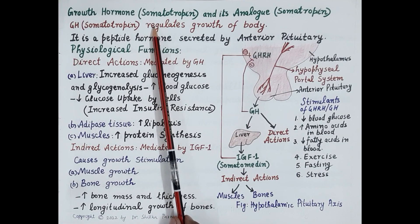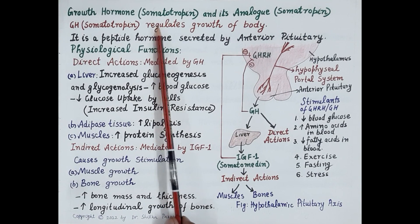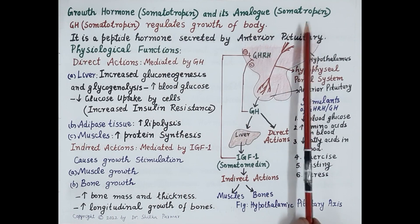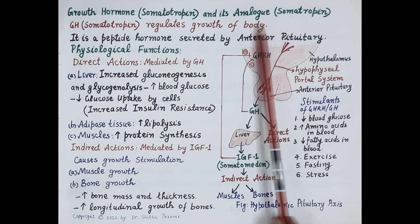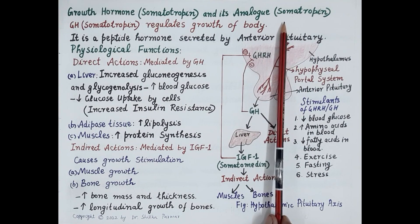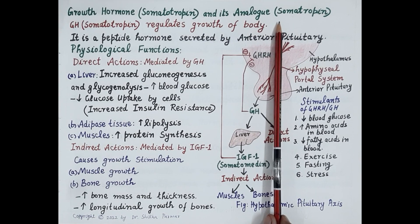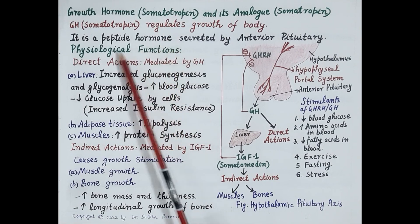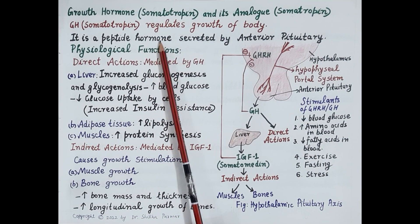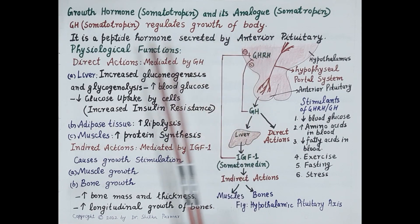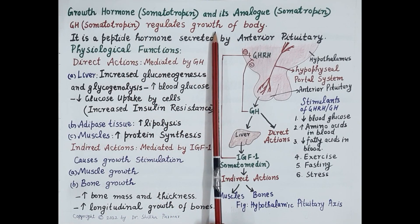In today's video we are going to discuss the physiology of growth hormone, also called somatotropin, as well as the pharmacology of somatropin. Somatropin is an analog of natural growth hormone, similar to it in structure and function, and is synthesized using recombinant DNA technology. Growth hormone or somatotropin is a peptide hormone synthesized and secreted by the anterior pituitary, and as the name suggests, it regulates growth of the entire body.